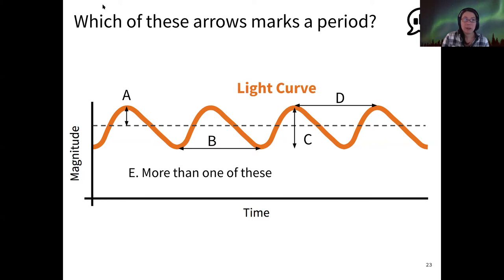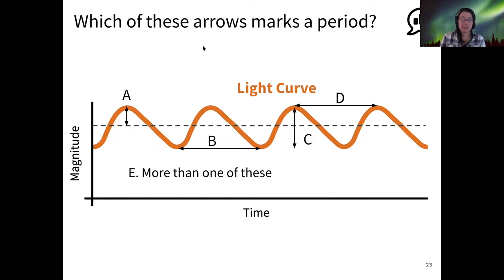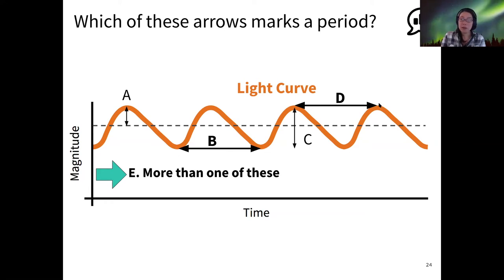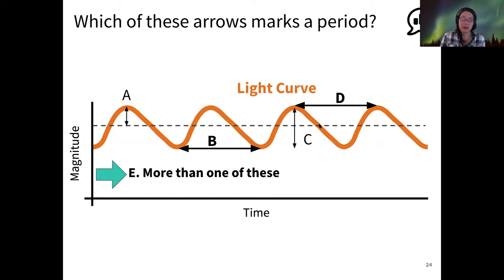Which one of these arrows do you suppose marks the period? If you said B or D, you're halfway correct. The correct answer is E, because both B and D mark the period of this particular light curve. You could use the minimum to a minimum, maximum to maximum, or even a specific point where it crosses the midline to when it does that again. Usually it's easier to use either the dips or the peaks.